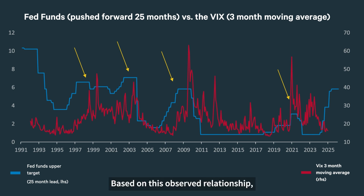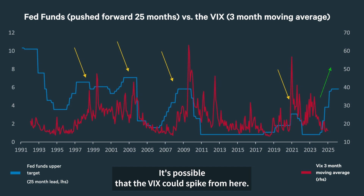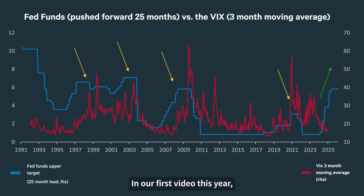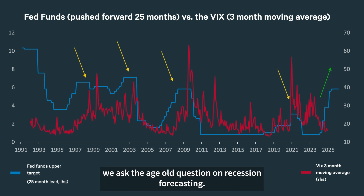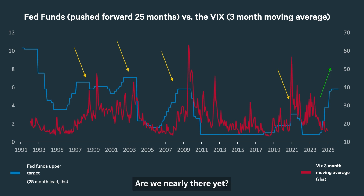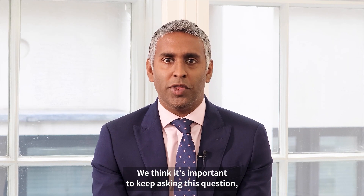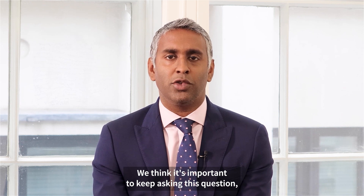Based on this observed relationship, it's possible that the VIX could spike from here. In turn, this would be likely to send the U.S. stock market lower. In our first video this year we asked the age-old question on recession forecasting: are we nearly there yet? Six months later, in our multi-asset portfolios, we think it's important to keep asking this question, even if it does frustrate the parent in the front seat.